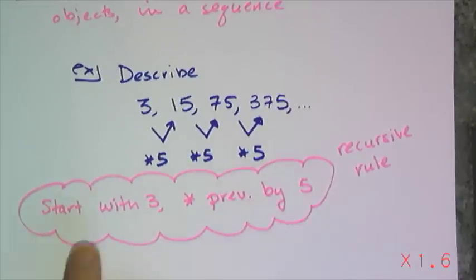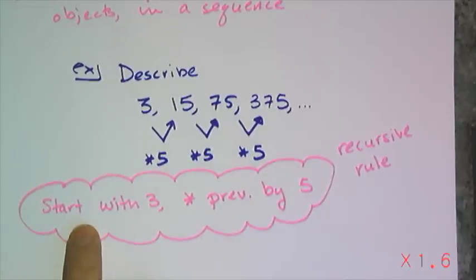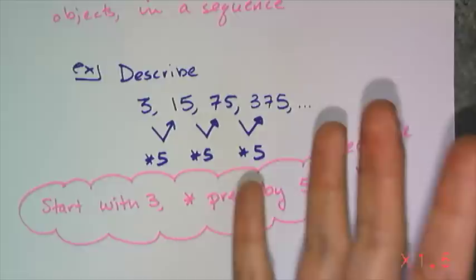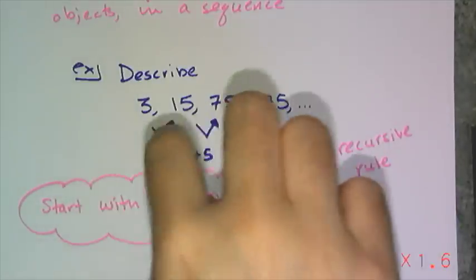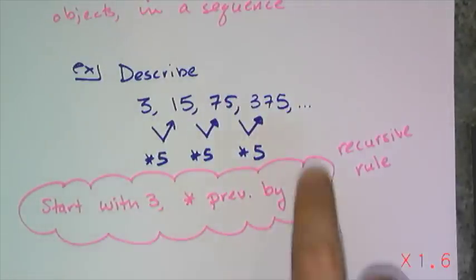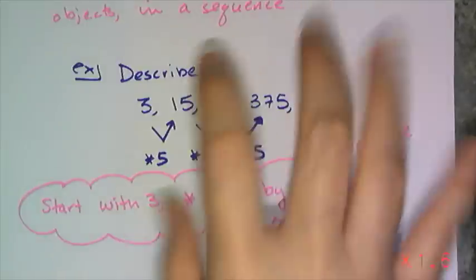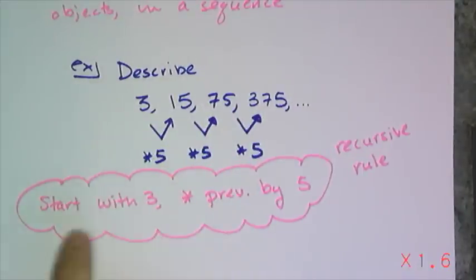And for a recursive rule, you always have to tell me what you start with because otherwise you can have infinitely many sequences that have the procedure of multiply previous by 5. What pins it to this particular sequence is the start with value.